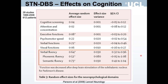This slide from a meta-analysis by Parsons shows that STN DBS produces its beneficial effects on the motor symptoms of Parkinson's disease without having any major side effects on cognitive function. The main side effect on cognition is a reduction of verbal fluency — both phonemic fluency, generating words beginning with particular letters such as F, A, or S, and semantic fluency, generating words belonging to a specific category such as animals.